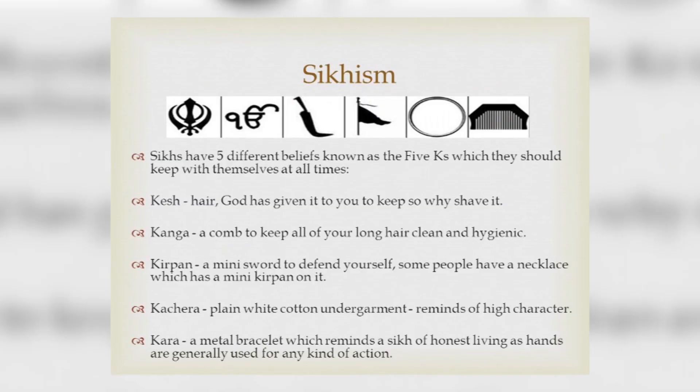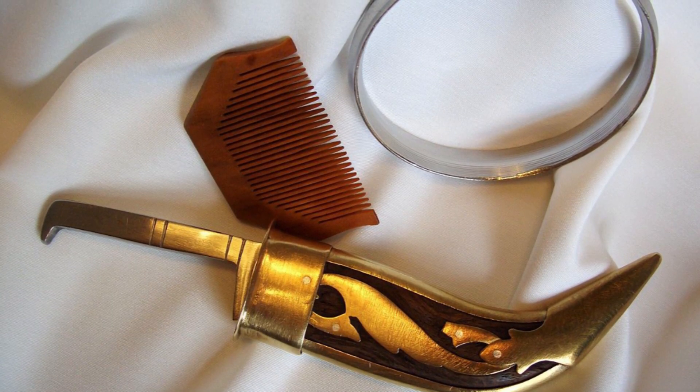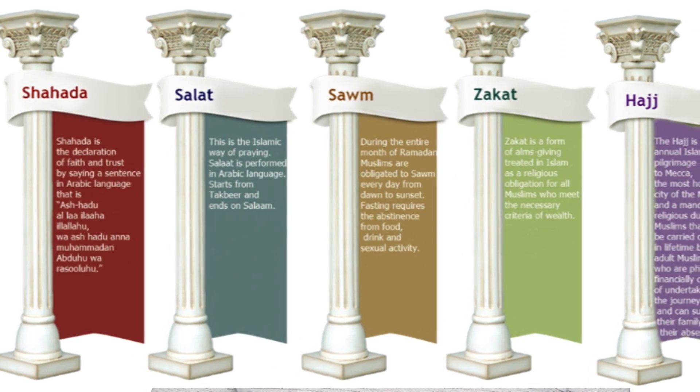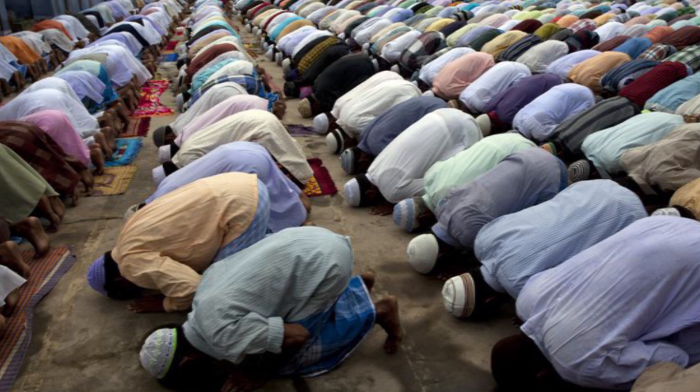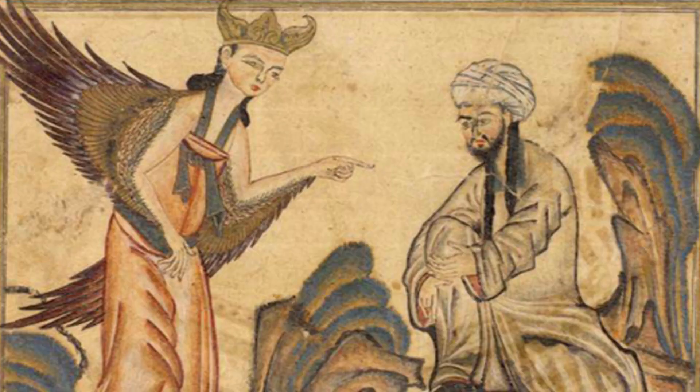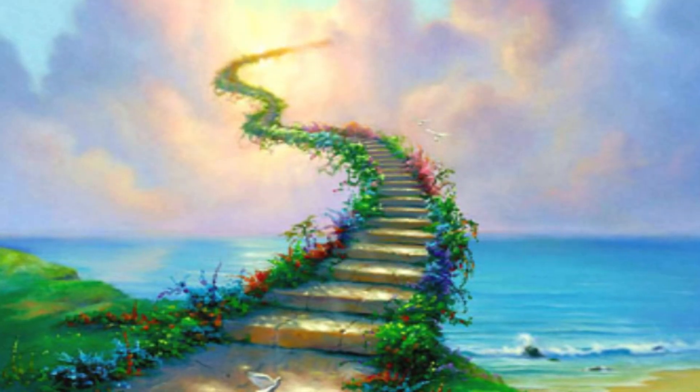Sikhism also has five essential beliefs: belief in one creator, the ten historical gurus, the Guru Granth Sahib and teachings of the ten gurus, and the initiation rites of the tenth guru. There are also five articles of faith seen on initiated Sikhs: unshaved hair covered by a turban, a wooden comb, a steel bracelet, a ceremonial short sword, and a specially designed undergarment. In Islam, there are the five pillars: the testament that there is one God and Muhammad is his messenger, prayer five times daily, fasting during Ramadan, charity to the poor, and the pilgrimage to Mecca at least once in your life. Islam also has six articles of faith: belief in Allah, in angels, in the prophets, in the Quran, in the resurrection and afterlife, and in destiny and fate carried out by the will of Allah.